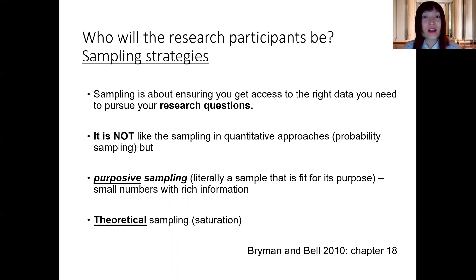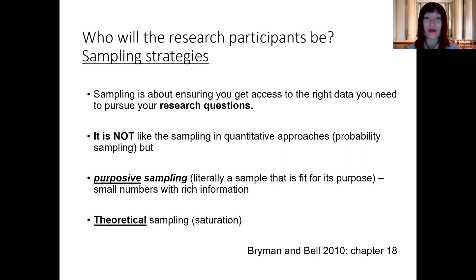We do have a couple of sampling strategies that we can use in qualitative research. This is also linked to the concept of rigour, as we discussed in the second part of the lecture. For rigour, we're trying to aim for a research design which is as representative, as reliable, and as valid as possible. Using an appropriate sampling strategy would help us reach rigour in our qualitative research, and that's the same for quantitative research.